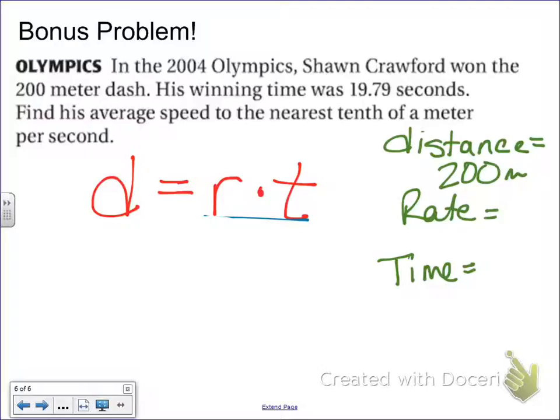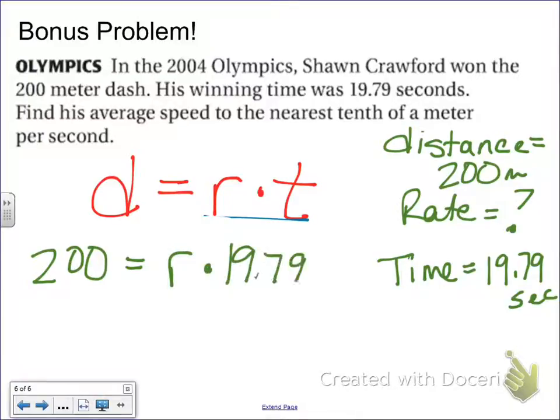Well, yes, now I know. It tells me the problem. It took him 19.79 seconds. So the one thing I don't know about this problem is the rate. I don't know what my rate is. So what I'm going to do is plug in my numbers into the equation. So 200 meters equals the rate, which we don't know, times time, which is 19.79.